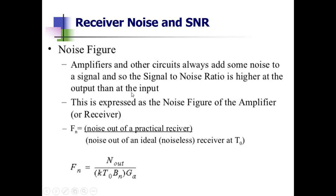Amplifiers and other circuits always add some noise, so the signal-to-noise ratio at the output is lower than at the input. The expression for Fn is: noise out of a practical receiver divided by noise out of an ideal noiseless receiver at standard temperature T₀. For an ideal receiver, the noise input Nin equals K·T₀·Bn, where K is Boltzmann's constant, T₀ is the standard temperature of 290 K (approximately 62°F), Bn is the noise bandwidth, and Ga is the available gain.